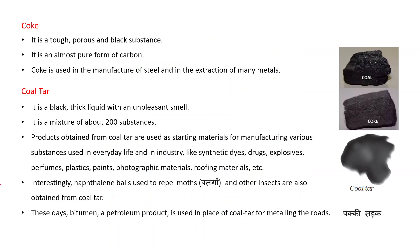Coke is a tough, porous, black substance. It is an almost pure form of carbon. Coke is used in the manufacture of steel and in the extraction of many metals — that is, metals are obtained from minerals found in the Earth's crust through the process of mining, and obtaining metal from those minerals is called extraction of metal.